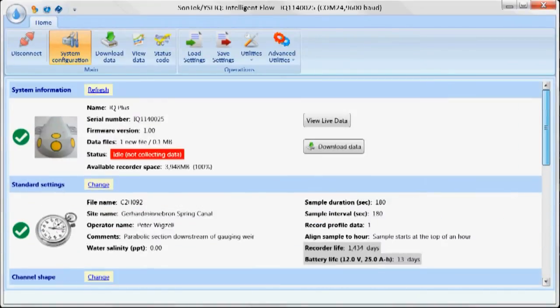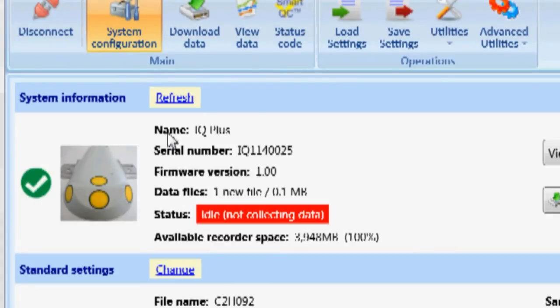In this case, I've already programmed the instrument. This is the instrument we actually used in the field today. As far as the system information, we're using the IQ Plus. It gives you the serial number, the firmware version. It's telling me that I have one new file on the recorder of the instrument that needs to be downloaded. It gives me the operating status. In this case, it's idle. We're not collecting any more data. And it gives me the available recorder space.